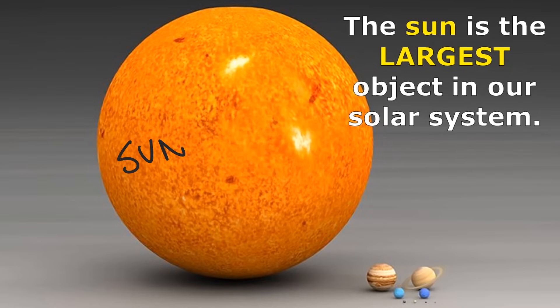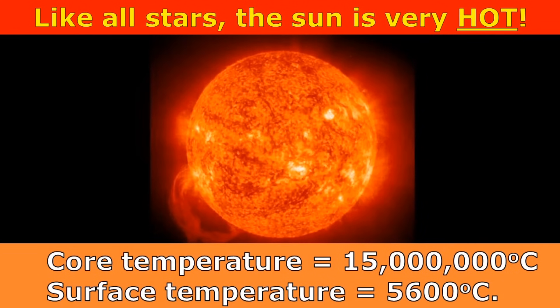The Sun is the largest object in our solar system, and it is much, much larger than all of the planets. Like all stars, the Sun is very hot. The core temperature, which is the temperature at the center of the Sun, is 15 million degrees Celsius. And the surface temperature is 5600 degrees Celsius.